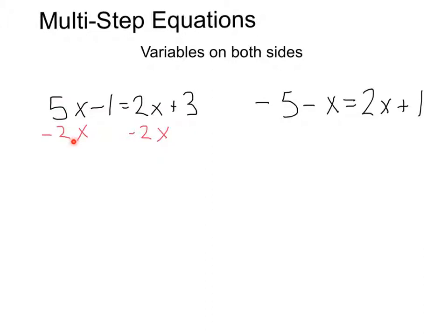So I have 5x minus 2x. That's going to give me 3x. Then I still have this minus 1 here, minus 1. Now my 2x's cancel, and I'm left with an equals 3.